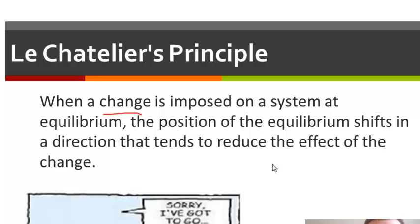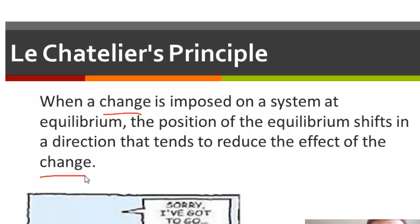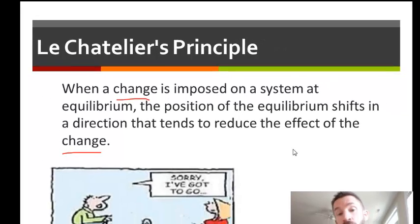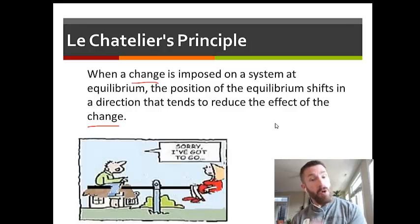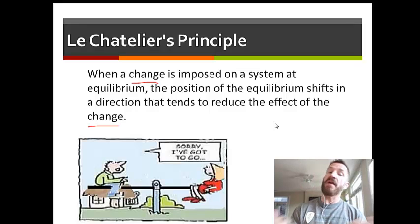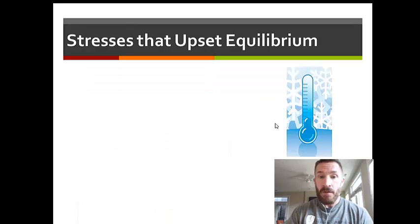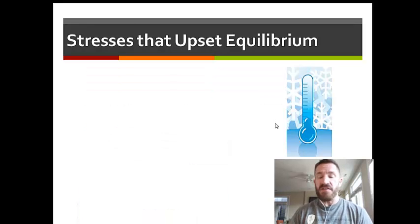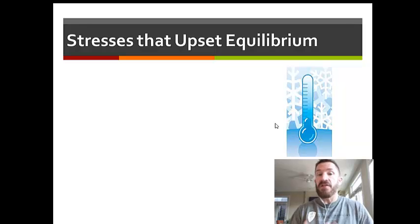Change will simply be referred to as a stress. When we talk about shift, it means it's going to increase either the rate of the forward reaction or increase the rate of the reverse reaction. There are three stresses that upset equilibrium, and we're going to discuss each one individually, but first I'm going to list them.